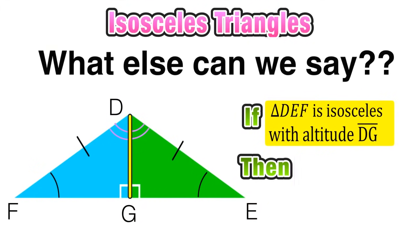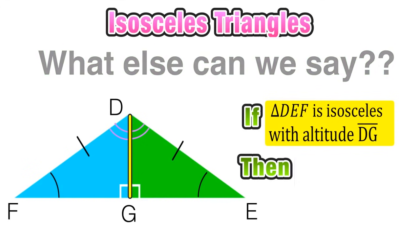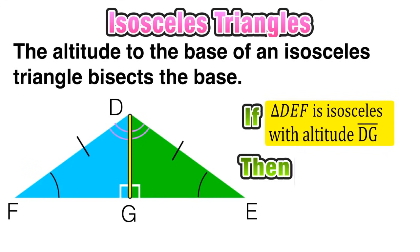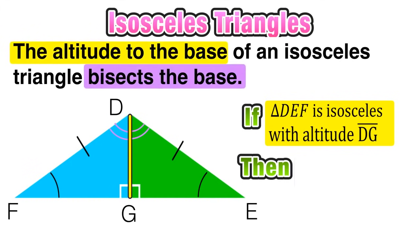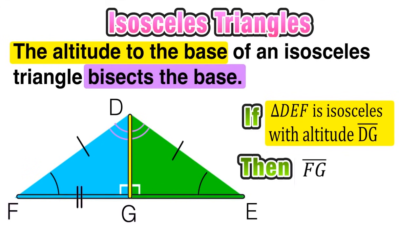Is there anything else we can say about isosceles triangles using these relationships? It turns out that altitude DG does more than just bisect the vertex angle — it also bisects the base. That line DG will cut the base FE into two congruent halves, and we can conclude that FG is congruent to EG based on this relationship.